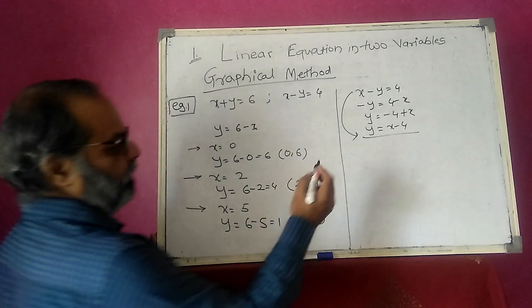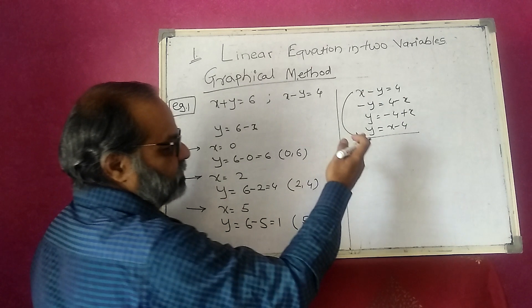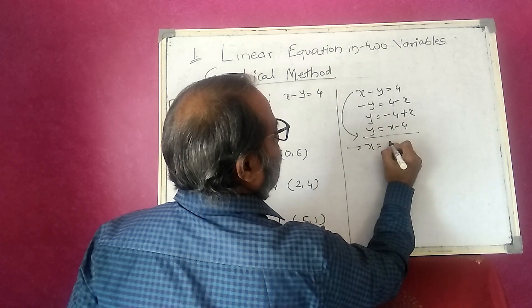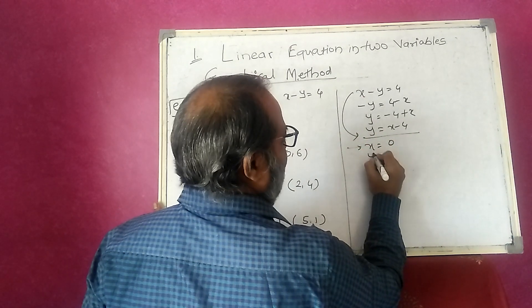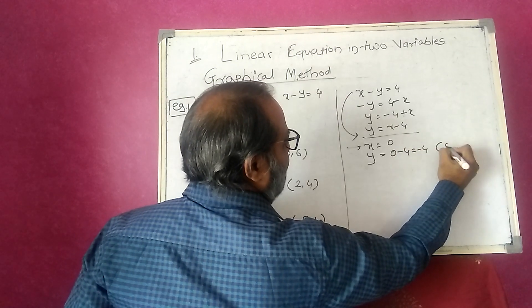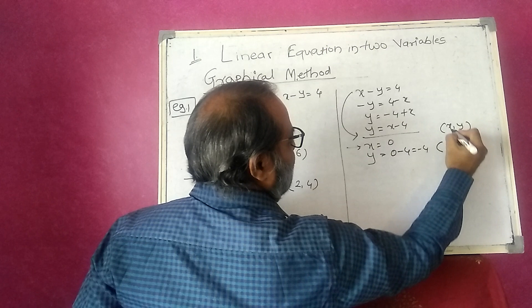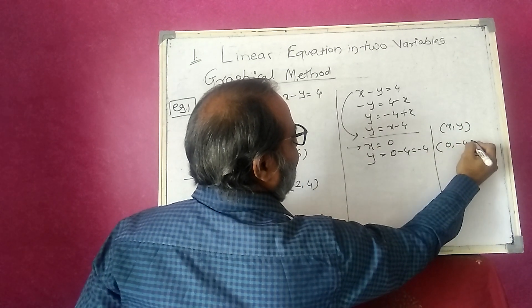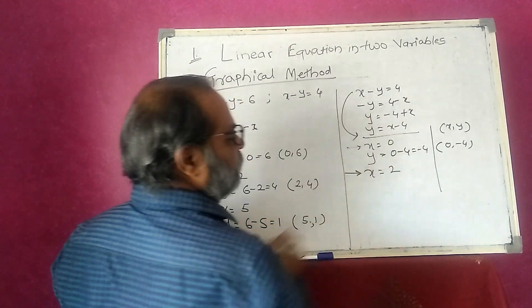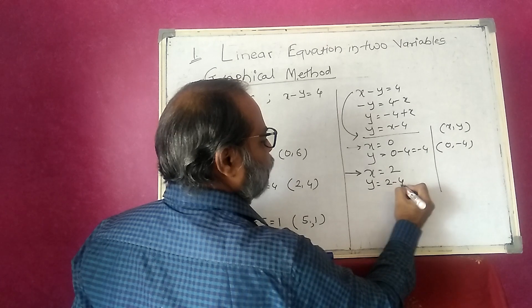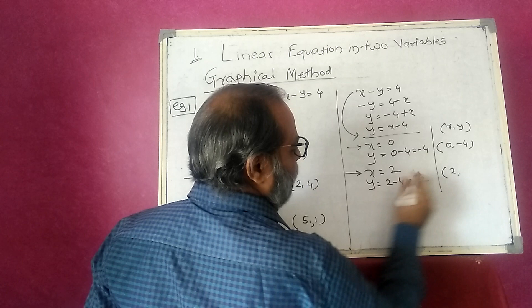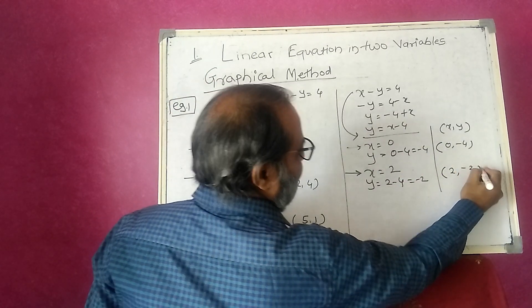Using the same procedure, I take any three coordinate values of x to find y. Taking x equal to 0, my value of y becomes 0 minus 4, that is minus 4, so the coordinate is (0, -4). Taking x equal to 2, then y becomes 2 minus 4, which is minus 2, and my coordinate becomes (2, -2).